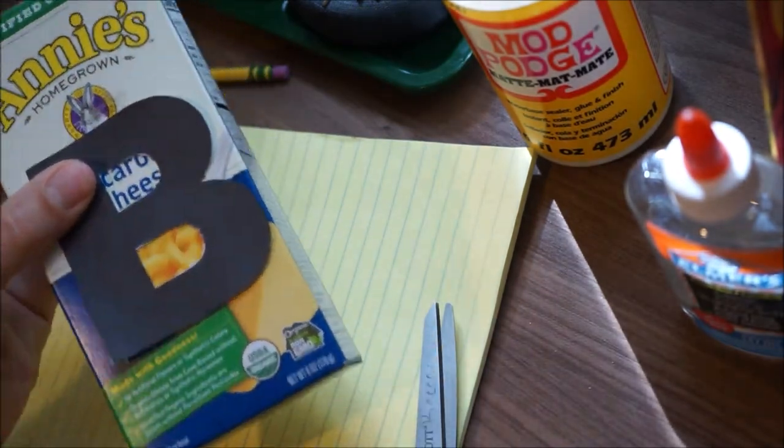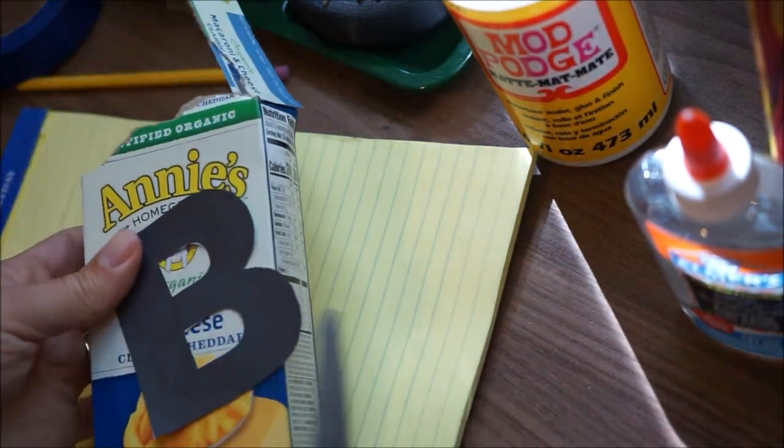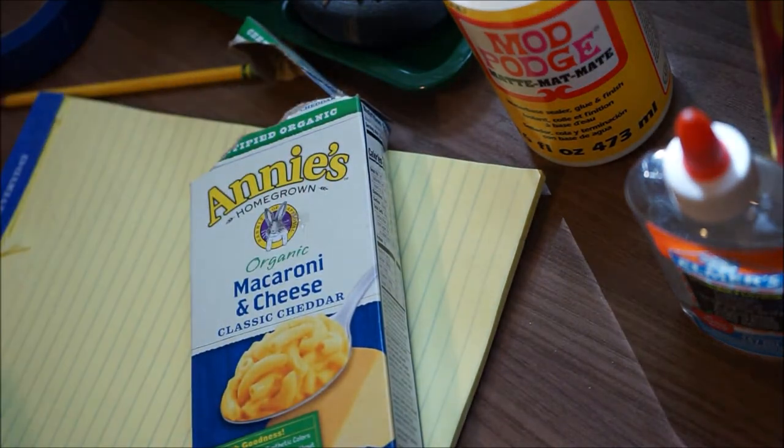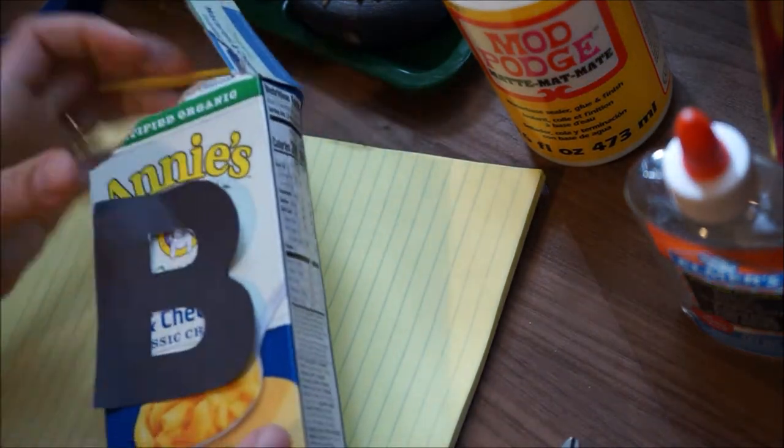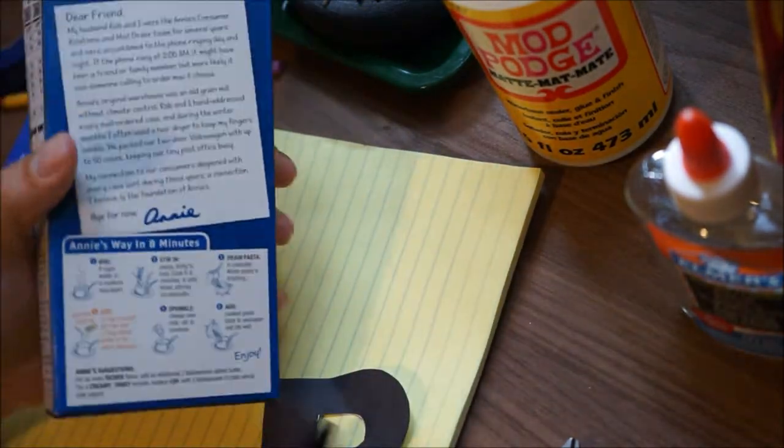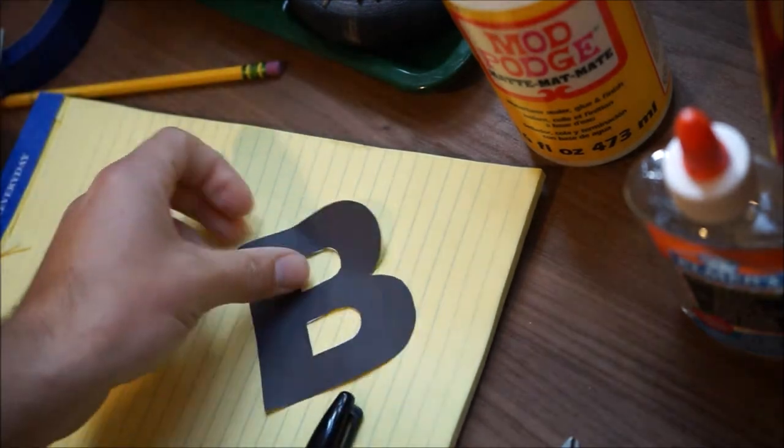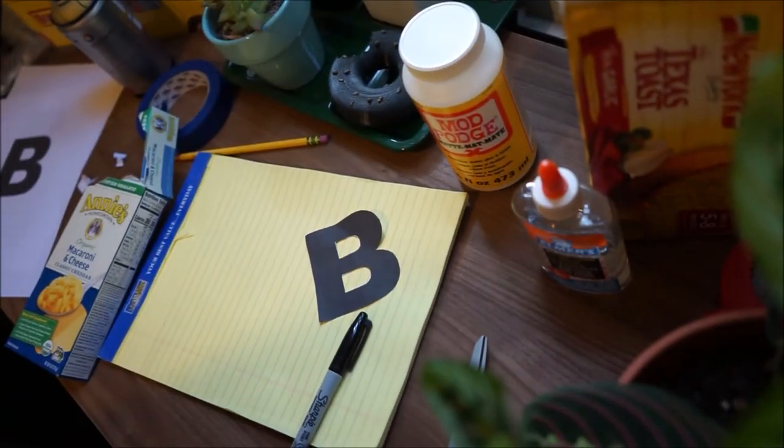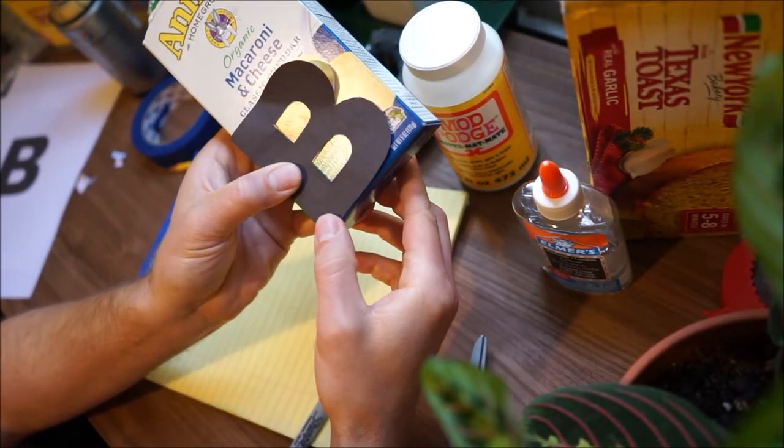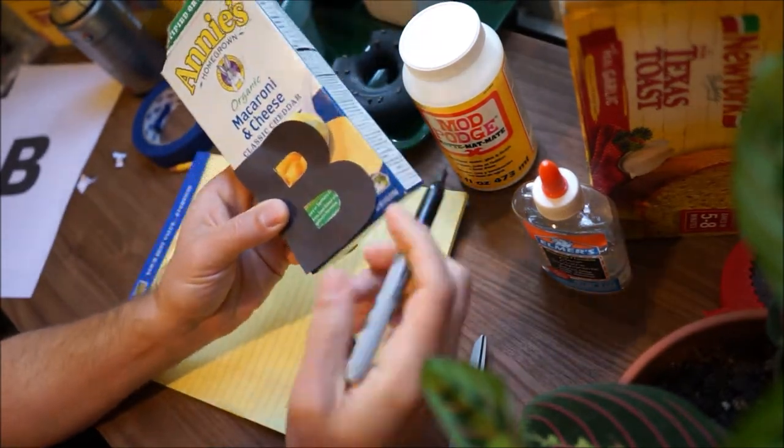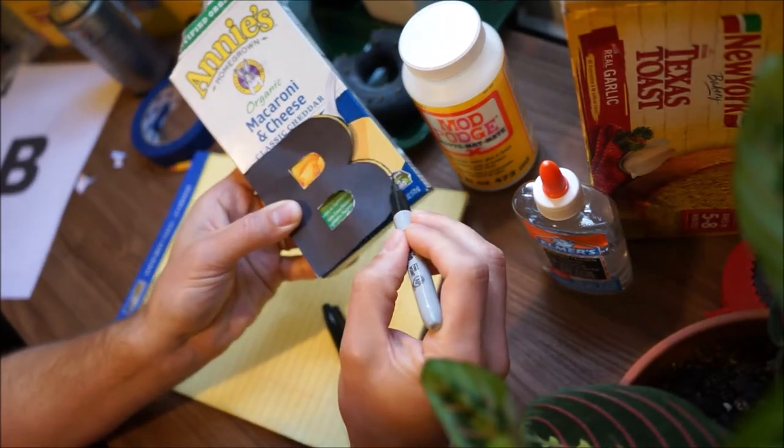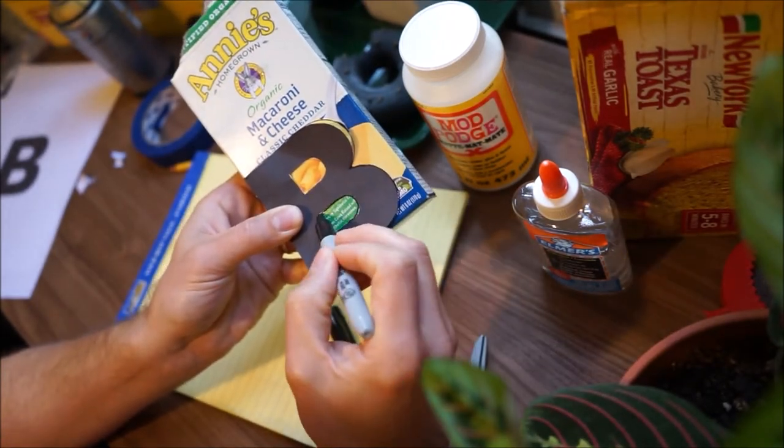Then, once we have the B cut out, we're going to put it on top of our box. Now try to line it up with the very edge of the box, the very bottom corner. It might be a bit confusing depending on how your box is made, but you're going to try to line it up with the bottom corner of the front of the box. Then take the permanent marker and trace around it. Don't forget to trace those inside negative shapes of the B.